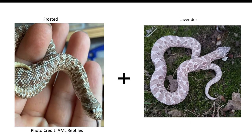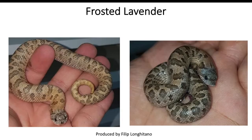If we take it a step further and add the hypo gene, we produce another snake first produced in 2020 — the frosted lavender — which is probably one of the most unique-looking hognose snakes we have right now.